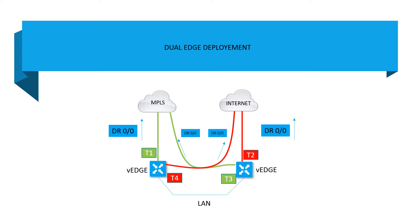To fix the broken connectivity and make the network more redundant and reliable, you can get additional links from MPLS and internet and extend them to the VH routers in a cross-connect fashion. The internet is extended to VH1 and the MPLS connection is extended to VH2. In case of device failure, at least these VH devices will be able to route and utilize all available links.